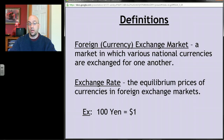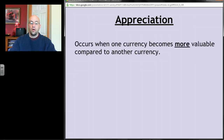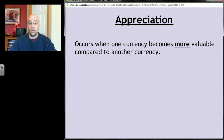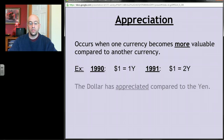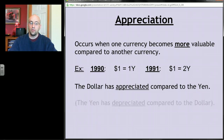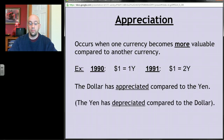Exchange rates tell us how many dollars a yen equals, or how many yen a dollar equals. When one currency becomes more valuable compared to another, we call that appreciation. For example, if in 1990 a dollar was equal to one yen, and a year later a dollar was equal to two yen, we'd say the dollar has appreciated — it's gone up in value against the yen. Alternatively, we could say the yen has depreciated; it takes two yen to get a dollar in the second year versus one in the first.